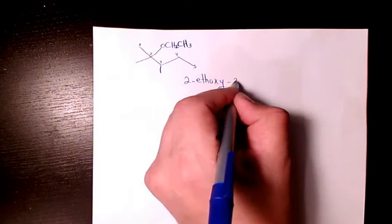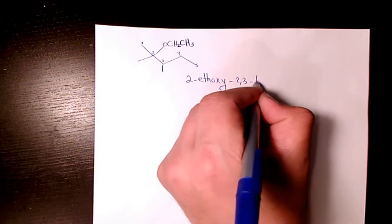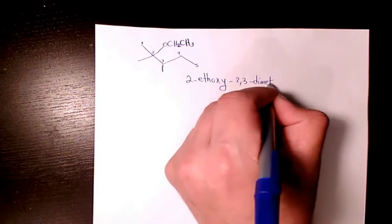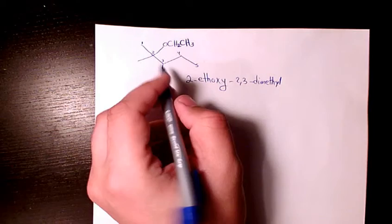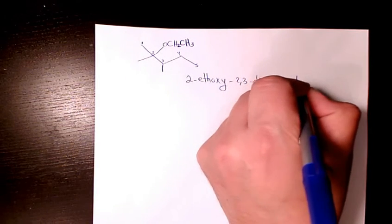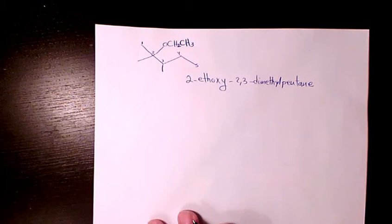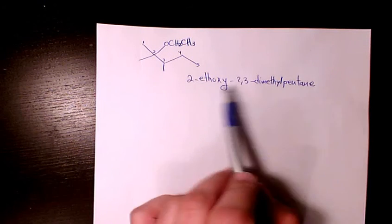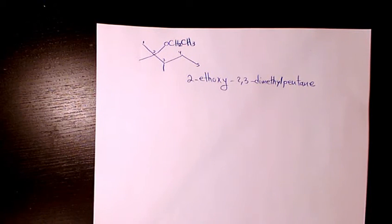2 and 3 dimethyl pentane. That's gonna be the IUPAC name, and there is no common name for this organic compound.